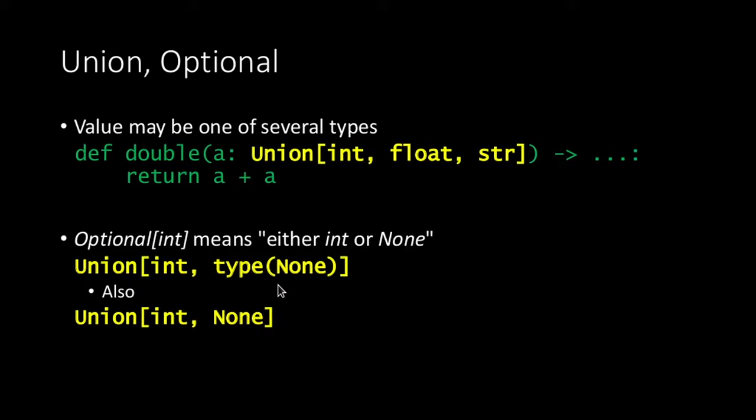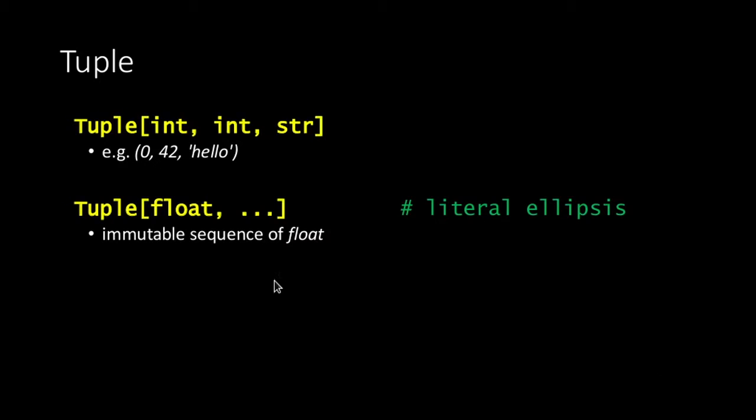Union means we allow any of those three types because they allow the addition operation. A Union of int or None, for example, is an optional — you can write it as int or None, or just use Optional. PyCharm also accepts when we initialize a value to None and understands it's a union. A tuple enables us to say this tuple has two ints and then a string, or a tuple with a sequence of floats using ellipses. We can also mark something as callable. All these identifiers come from typing.py.